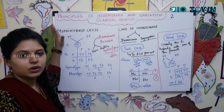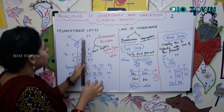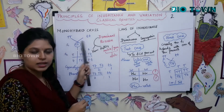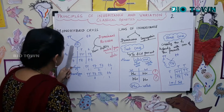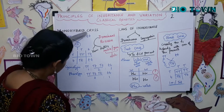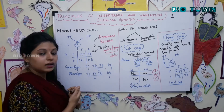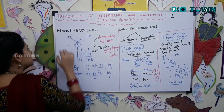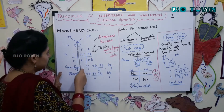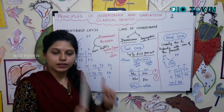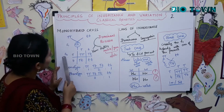In the monohybrid cross, Mendel took a tall plant and a dwarf plant and fused them. In the F1 generation — the filial first generation — alleles (previously called factors) pair up. The result was that all plants were heterozygous dominant, with capital T and small t, meaning all plants were tall but not homozygous dominant.